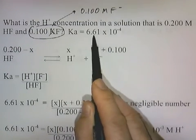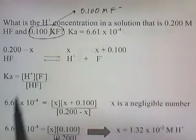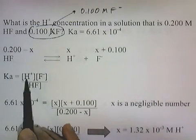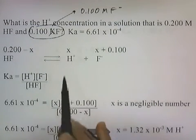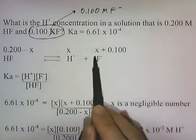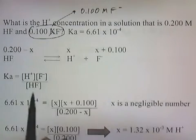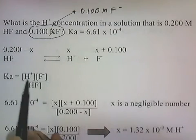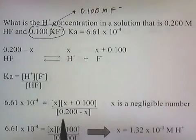We put the numbers in. We're given that Ka is 6.61 × 10^-4. Concentration of H+ is x. Concentration of fluoride is going to be x + 0.1. Concentration of HF is going to be 0.2 - x.